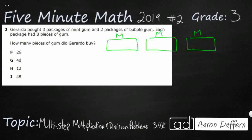So I've got my three packages of mint here, and then two packages of bubble gum. So I'm just going to put B and B. They don't have to necessarily be the same size, but I went ahead and drew them all to be the same size because it says that each package had eight pieces of gum. So I've got my three packages of mint, my two packages of bubble gum.